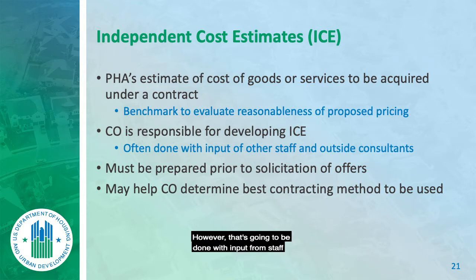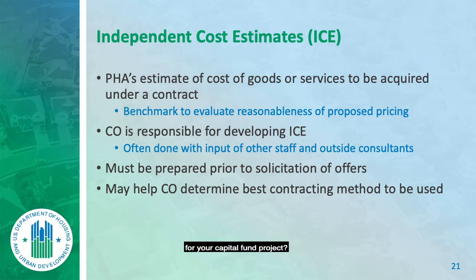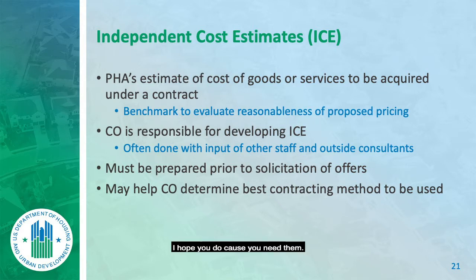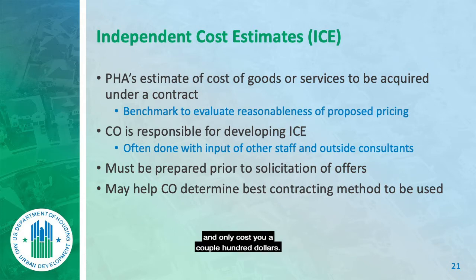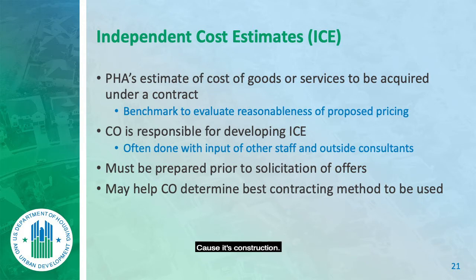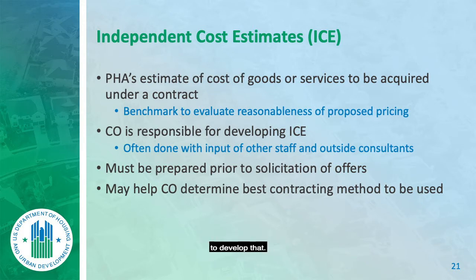The contracting officer is responsible for developing the ICE, though that will be done with input from staff and sometimes other consultants. For capital fund projects, architects can do the ICE for you and it only costs a couple hundred dollars. You take what they provide for that project and list it in the form — usually capital fund will be a firm fixed fee because it's construction, but it's very appropriate to use the architect to develop the ICE.